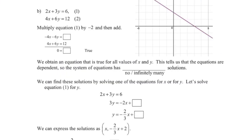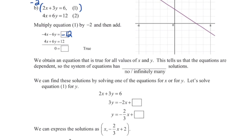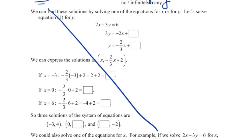For 2x plus 3y equals 6 and 4x plus 6y equals 12, I notice that multiplying the top equation by negative 2 gives negative 4x minus 6y equals negative 12. Adding to the second equation, everything cancels and we get 0 equals 0 — a true statement. This tells us the equations represent the exact same line, so they have infinitely many solutions. The system is dependent and consistent. Solutions can be written in general form, but we'll skip that for homework.